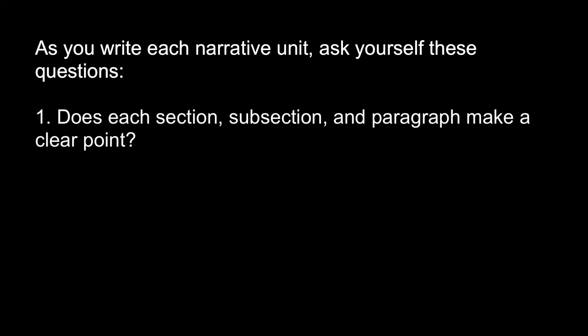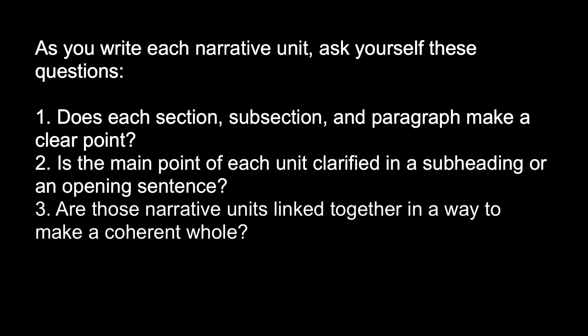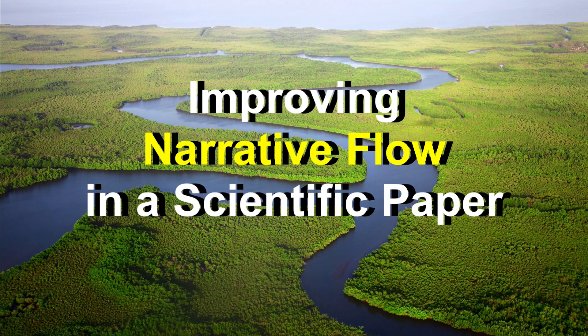Does each section, subsection, and paragraph make a clear point? Is the main point of each unit clarified in a subheading or an opening sentence? Are those narrative units linked together in a way to make a coherent whole? Have I used sufficient transitions to help the flow? By ensuring each narrative unit has a clear point and follows a story arc, your writing will flow much better. Thanks for watching and please like my video if you found it helpful.